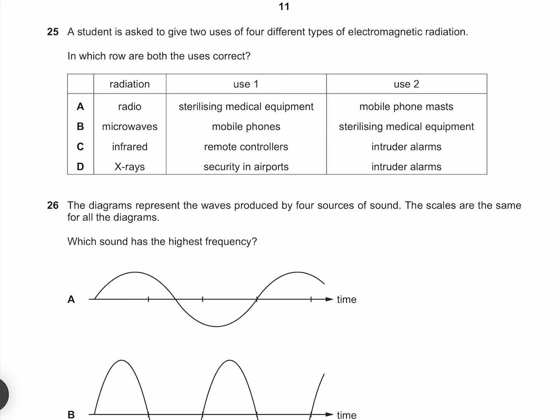A student is asked to give two uses of four different types of electromagnetic radiation. In which row are both the uses correct? Radio waves don't have the energy to sterilize medical equipment, but they are used for mobile phone masts. Microwaves are used by mobile phones but once again don't have enough energy to sterilize medical equipment. Infrared is used in remote controllers and also in intruder alarms. X-rays are indeed used for security at airports but are certainly not used in intruder alarms. Our correct answer therefore must be C.